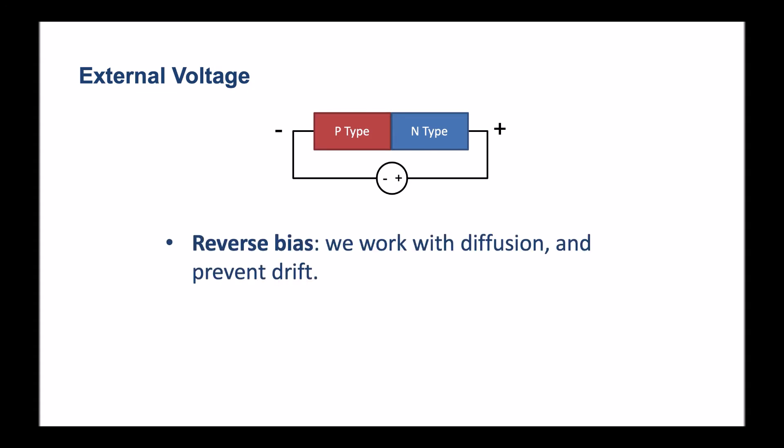In this instance, we're working with diffusion and we prevent drift. In this instance, the depletion region grows and conductivity decreases.